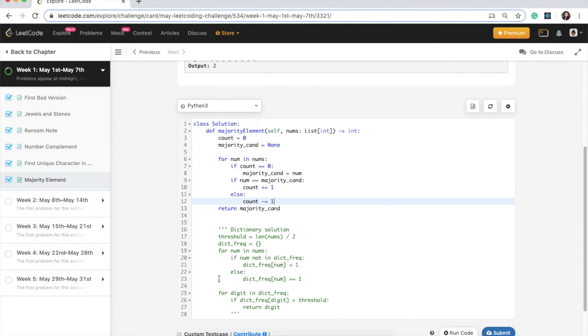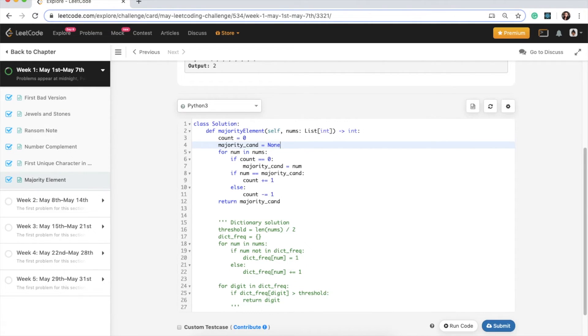Okay, so I'm back in the code. And what I've done is I just commented out my previous solution with the dictionary. And here I have the more optimized solution for this problem. So what I've done first is I've initialized my count to zero. And I just set the majority candidate to none initially. And then as we iterate through our nums array, what I'm doing is I am just setting the majority candidate to num if the count is zero. So in the first case, what will happen is this majority candidate will be initialized to the first number in the array.